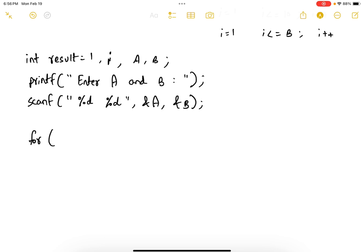For i equals to 1, i less than or equals to b, we have seen this before I'm just taking it from here, i plus plus. I say result equals result star a.